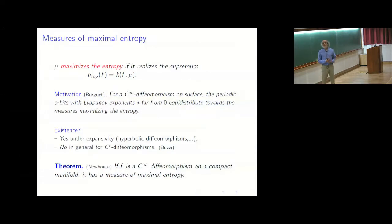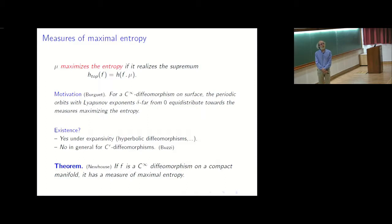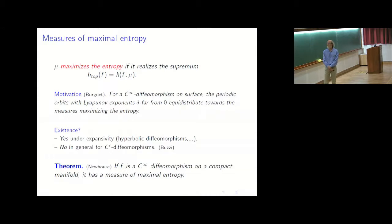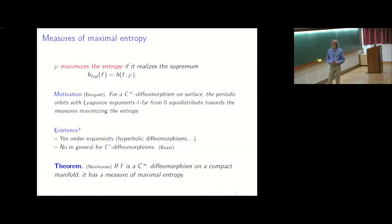There is a special class of measures that we are interested in. The first ones are measures maximizing the entropy. Remember that we have the variational principle, which says that the topological entropy of a map is the supremum of the entropy of its invariant measures. A measure maximizes the entropy if it realizes this supremum. For a general system it does not always exist.